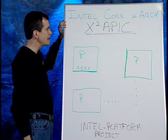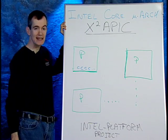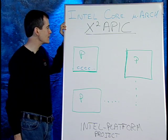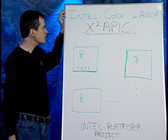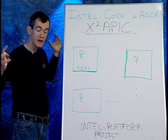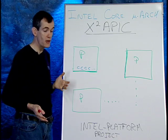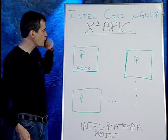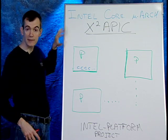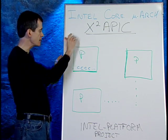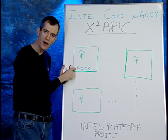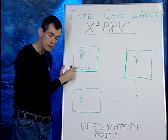I'd like to tell you about a feature we refer to as the Extended APIC, or X2APIC. It's a feature that's part of our overall core microarchitecture — some of you may know it as Nehalem. This is a way to actually get some very interesting limitations removed with this new architecture.